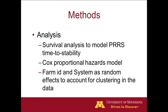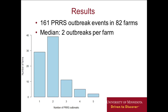We conducted a survival analysis — a technique used to model time to event, in this case time to stability. We used the Cox proportional hazard model, accounting for the effects of farm, repeated outbreaks within the same farm, and the system. For these six participants, we have 161 PRRS outbreaks recorded across 82 farms, with a median of two outbreaks per farm, though some farms had many outbreaks during this period.